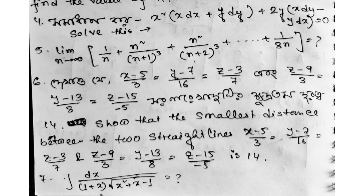Next question: X minus 5 divided by 3 equals Y minus 7 divided by 16 equals Z minus 3 divided by 7, and Z minus 9 divided by 3 equals Y minus 13 divided by 8 equals Z minus 15 divided by minus 5. Find the shortest distance which is 14.